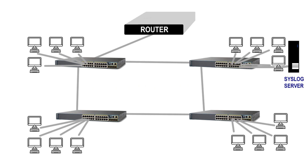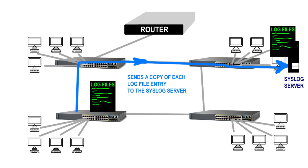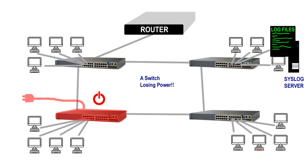Enter the syslog server. Admins and technicians can set up syslog servers on a computer network — typically on a server, but also on laptops and desktops — where switches and routers can not only record their own log file entries into their own RAM memory, but can also send the same log file entries across the network to a syslog server. This provides a secondary location for those log file entries in case the switch or router loses power or connectivity, giving the admin or tech better longer-term storage of the log files for review.